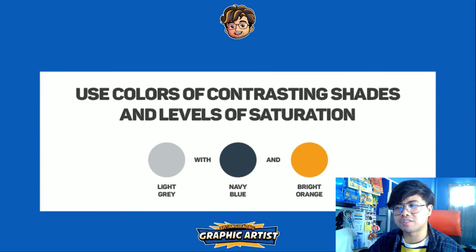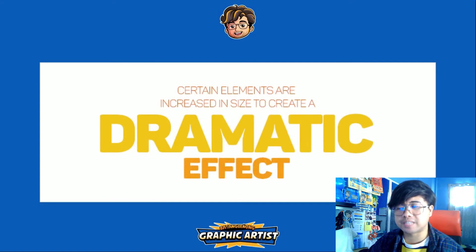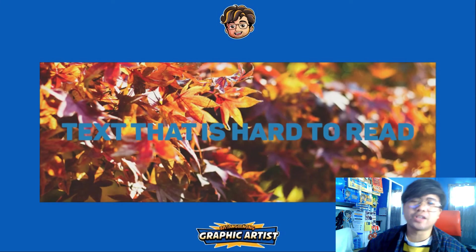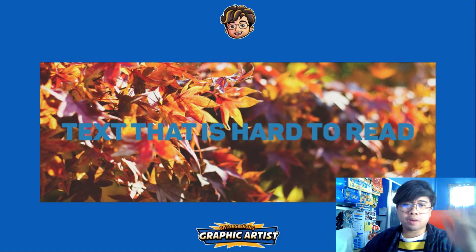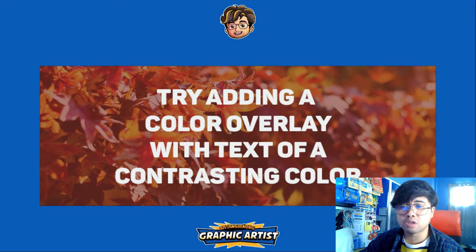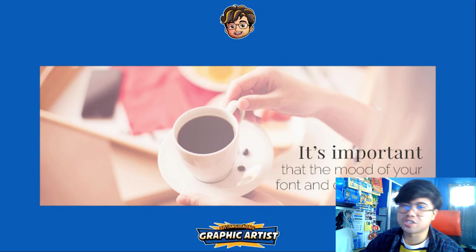Inadequate use of contrast — text becomes hard to read. Use colors of contrasting shades and levels of saturation. Failure to scale elements properly — poor hierarchy means viewers don't know where to look first. Give dramatic effect to the most important element by making it largest; supporting details should be smaller. Ignoring the rules of hierarchy is another problem. Text that is hard to read — for example, text placed over a busy background image without enough contrast. The solution is to blur the background or add an overlay so the text becomes readable.